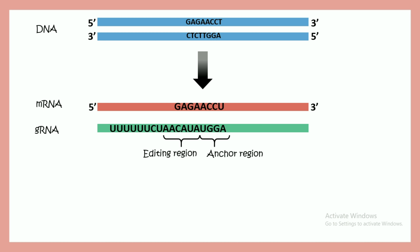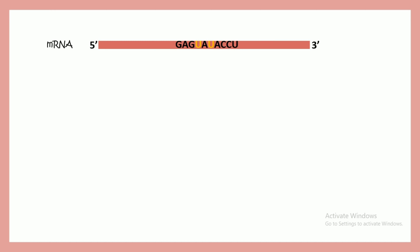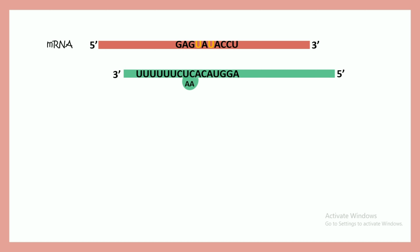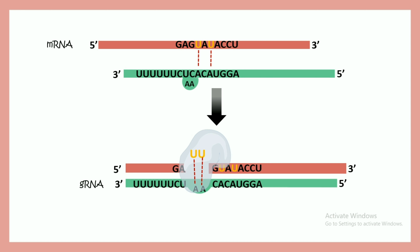In this mRNA there is addition of uracil, but as a result there is a mismatch between the mRNA and the guide RNA. Specific nucleases cut at the site of this mismatch, and then ligase enzyme attaches the uracil in this region.